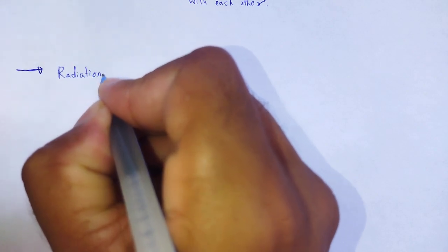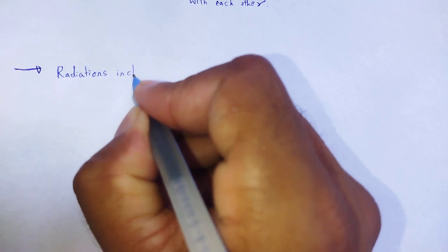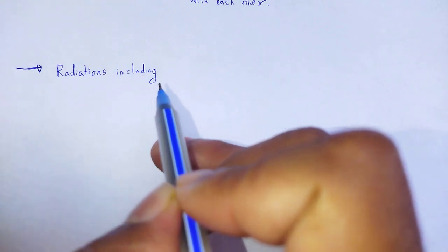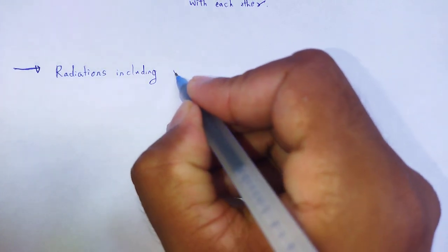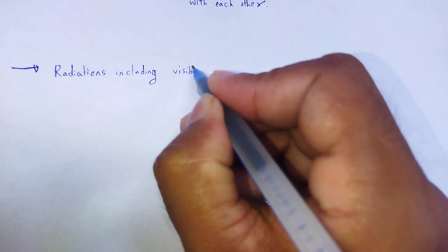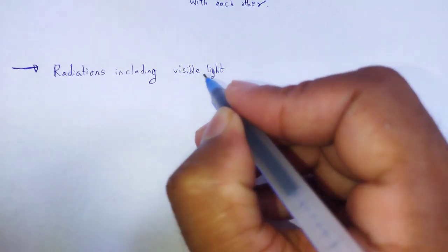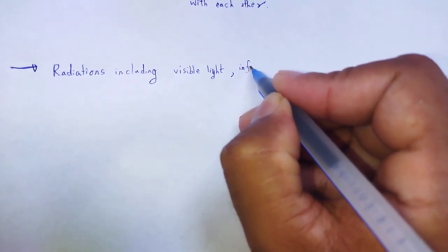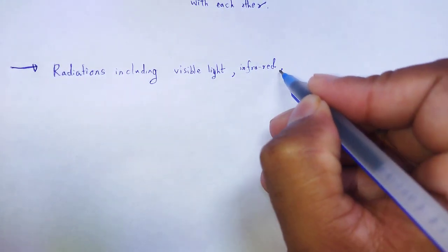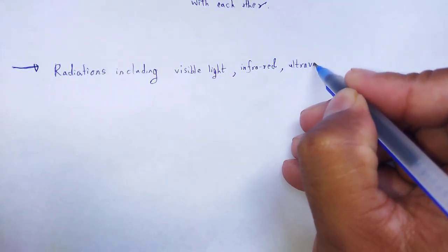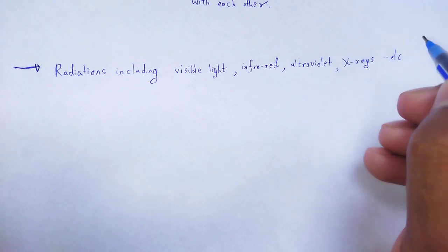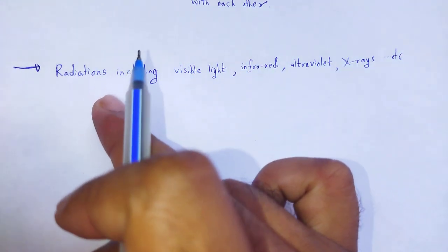The radiations we consider are electromagnetic radiations. These include visible light, which we know in terms of VIBGYOR, infrared, ultraviolet, X-rays, and so on. All of these fall under electromagnetic radiations.